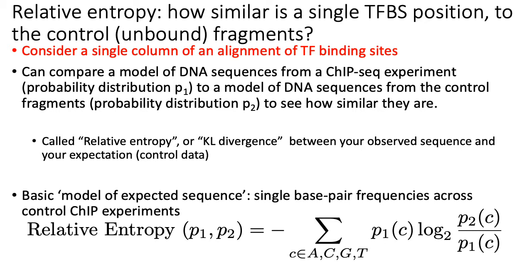A model of sequences, in the context of this lecture, means that if I look at one column of an alignment of TF binding sites, I can calculate how often — with what frequency — I see a given base in that column of the alignment. Just like with the entropy calculations, for a given position in my alignment of TF binding sites, I can ask: what fraction of the bases were A versus C versus G versus T? That forms my foreground, or my model of DNA sequences from my ChIP-seq experiment at a given position, which I'm calling P1.